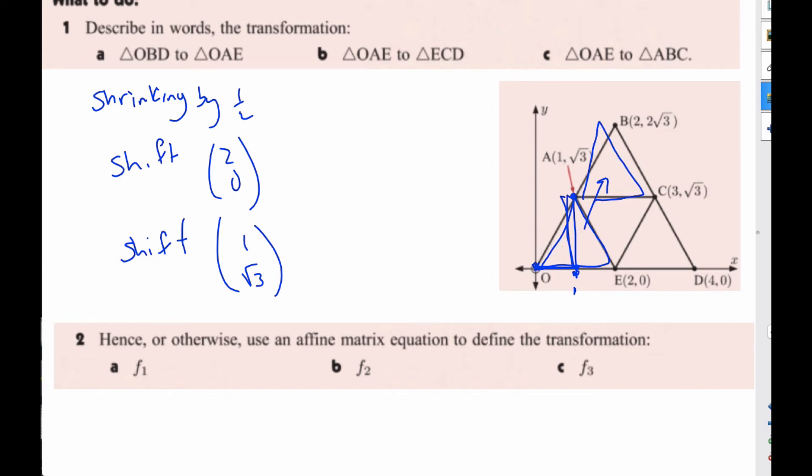Now, if I want to define F1, which is the first affine transformation, F1 equals the big triangle becoming this one. It shrinks it by one-half. This is going to be F1.